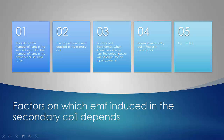For an ideal transformer there is no energy loss, so the output power is always equal to the input power — power in the secondary coil equals power in the primary coil. Power is voltage multiplied by current, so: Vs × Is = Vp × Ip. This is the power relationship for an ideal transformer.